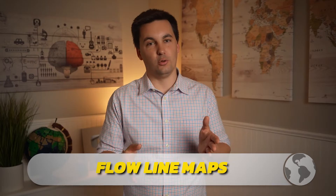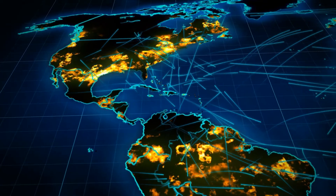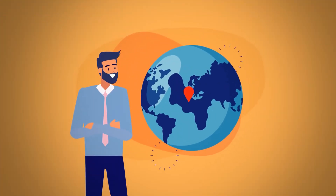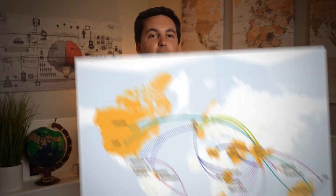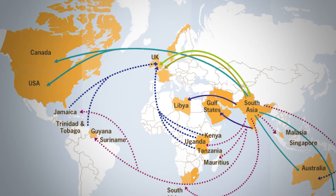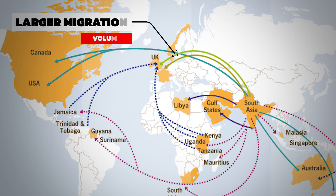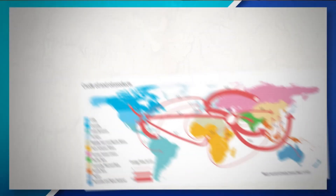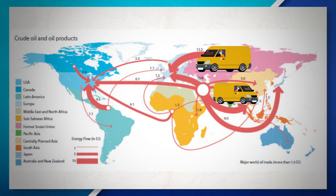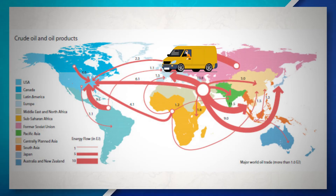Then there are flow line maps, which show the movement of different goods, people, animals, services, or ideas between different geographic locations. For instance, in a migration flow map, the lines represent the movement of people between different regions or countries, with wider lines indicating larger migration volumes. Or in a trade flow map, the lines depict the movement of goods between ports or trade routes, with thicker lines indicating higher trade volume.